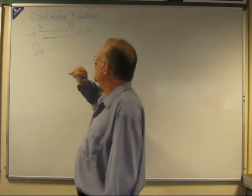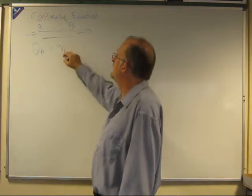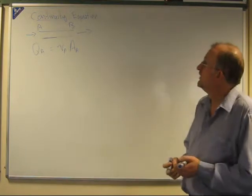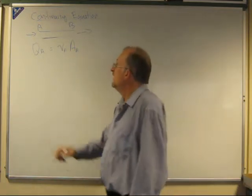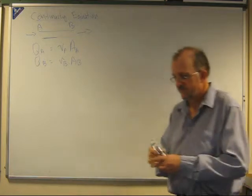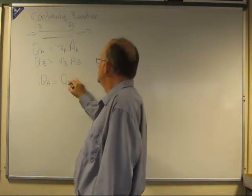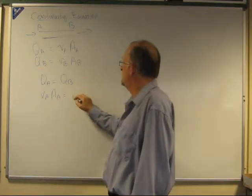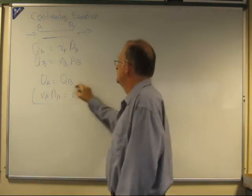So if we're dealing with the flow rate specifically, QA, the flow rate is going to equal the velocity at point A times the area of A. So that's going to be our flow rate. It's the velocity times the area. And again, QB at point B is going to be the velocity at B times the area at B. So that's the continuity equation.